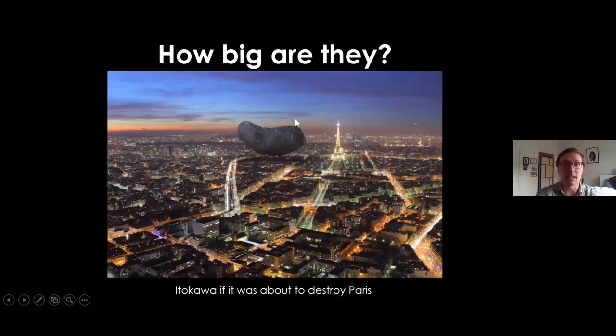Just to give you some scale, this is Itakawa. If it was on its way to destroy Paris, it would be glowing hot with a lot of gas as it came down. It would look something like this compared to the city. That would be very bad for Paris.